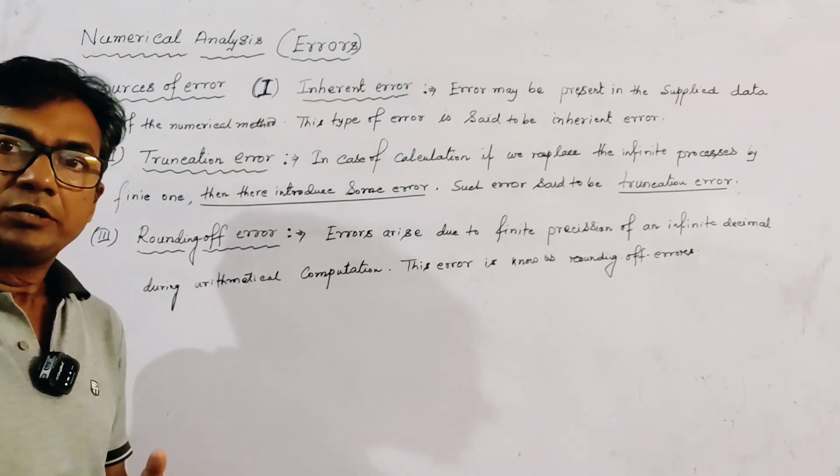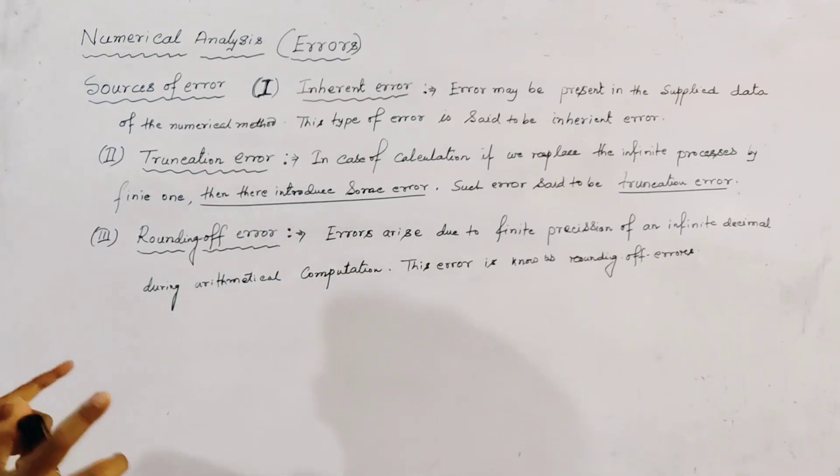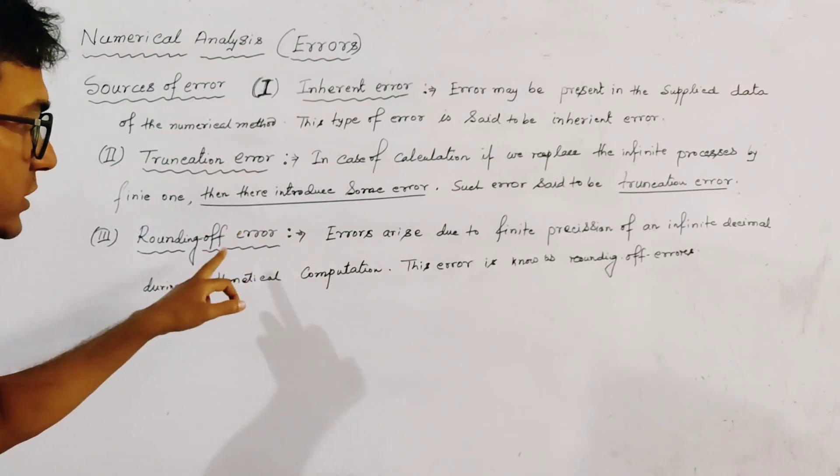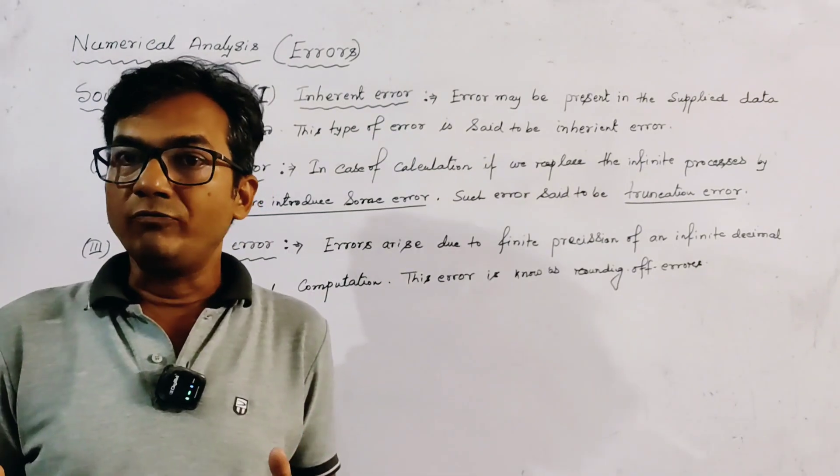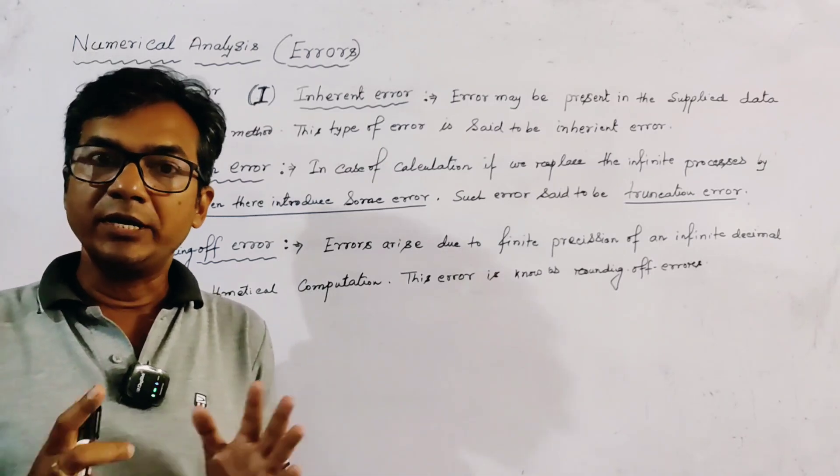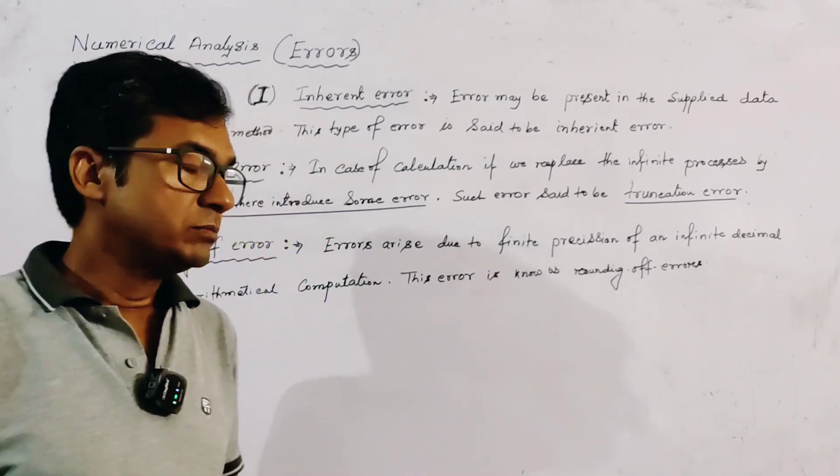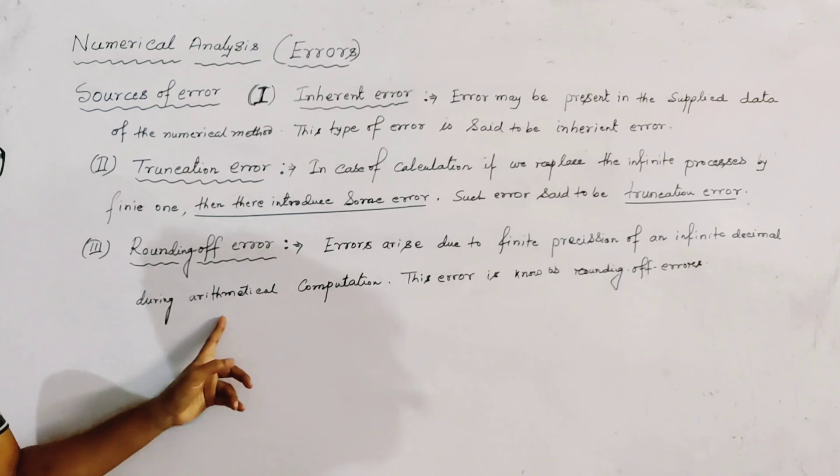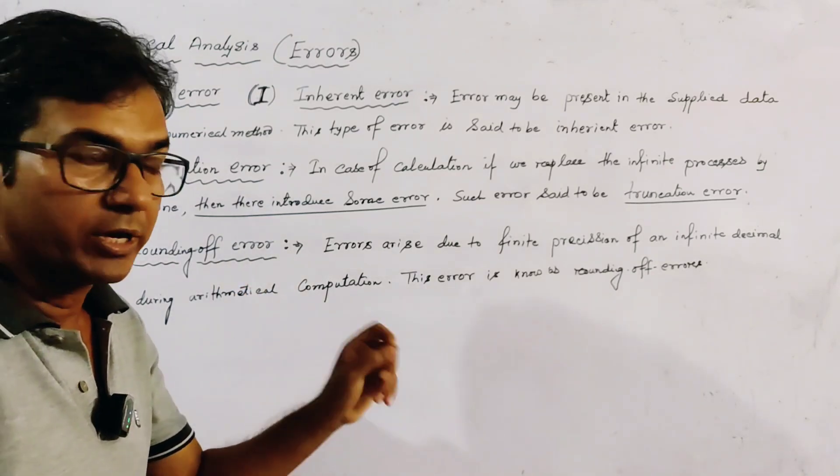And the third type of error or third source of error is rounding of error. What is rounding of error? Because of the limitation of computer, calculator, etc., in which we make the arithmetical computation.